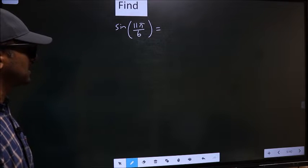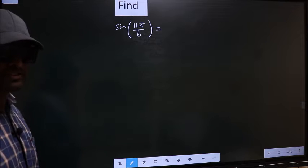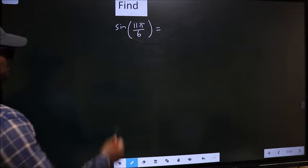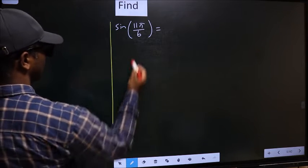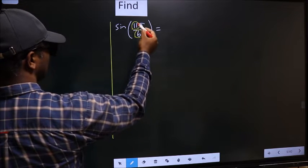Find sin 11π by 6. To find this, we should follow this method. See, in the denominator, we have 6. In the numerator, we have 11.